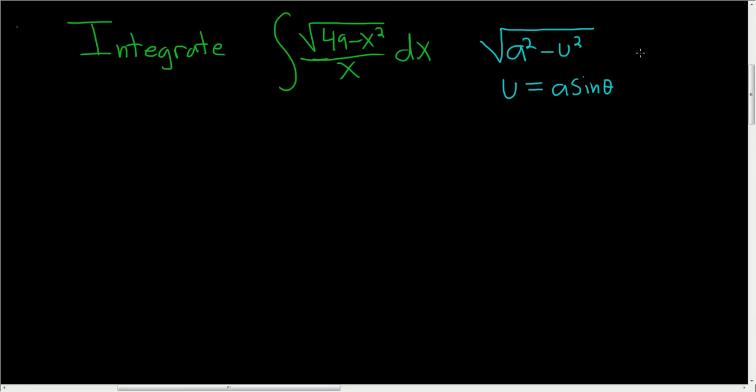A substitution that you can make is u equals a sine theta. So in this case we can think of 49 as 7 squared and so a is equal to 7 and u is equal to x.